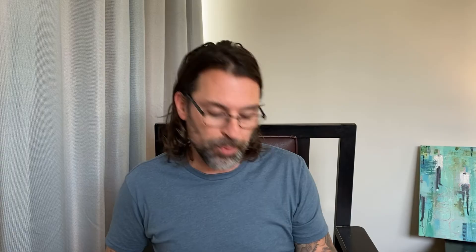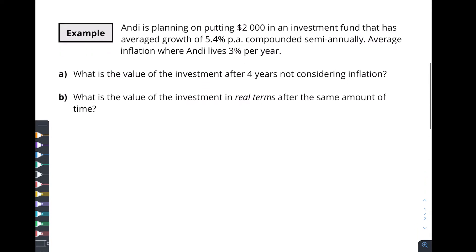Let's take a look at an example. What we say is: real value times inflation equals our future value. If we've got something today and we know there's going to be inflation over time, that gives us what our value will be in the future. In this example, Andy is planning to put $2,000 in an investment fund that has average growth of 5.4% per annum, compounded semi-annually. The average inflation where Andy lives is 3% per year.